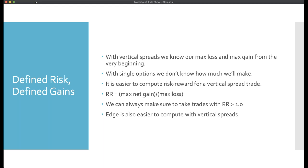One of the key consequences of a vertical spread is defined risk and defined gains. From the start of the trade, you know how much money you could lose — the cost of the spread — and also, as opposed to normal options, you know the maximum gain. With normal options, you can make anything from one cent to millions of dollars depending on where the market ends. With vertical spreads, we know the maximum gain. And because we can measure it from the beginning, we can compute risk-reward: maximum net gain divided by maximum loss.